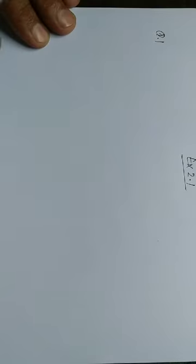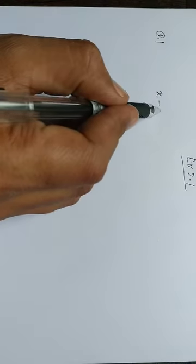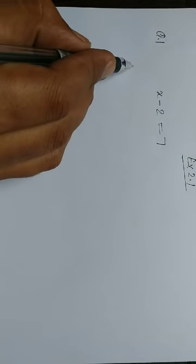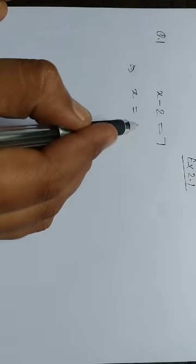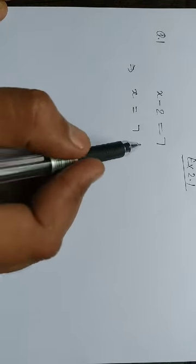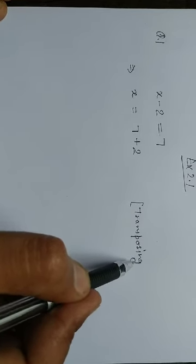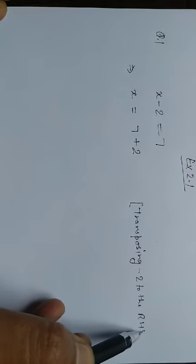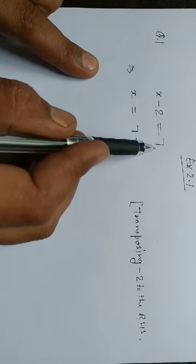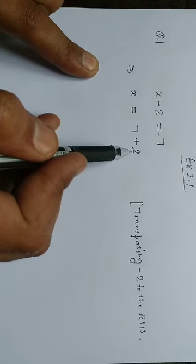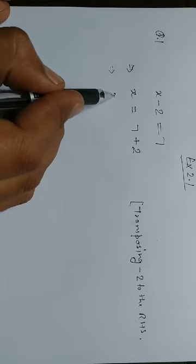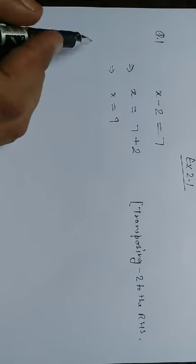Let's start Exercise 2.1. Question number 1: the given linear equation is x minus 2 is equal to 7. Transposing minus 2 to the right hand side, it becomes plus 2. So that implies x is equal to 7 plus 2, which is 9. This is the answer.